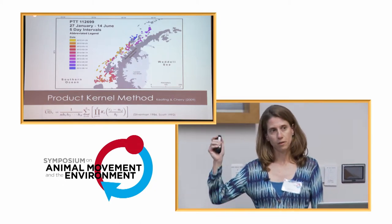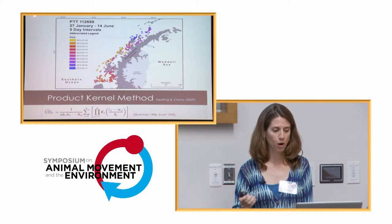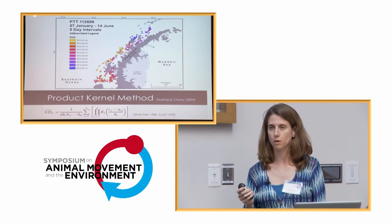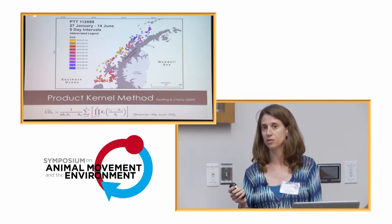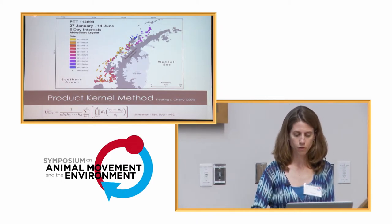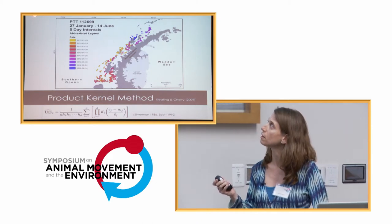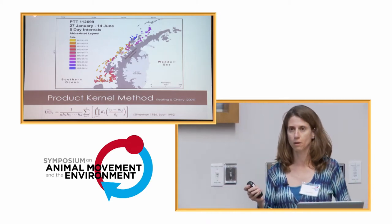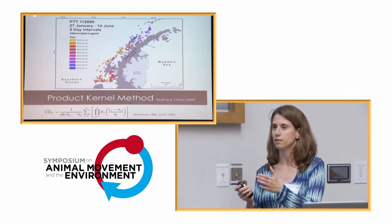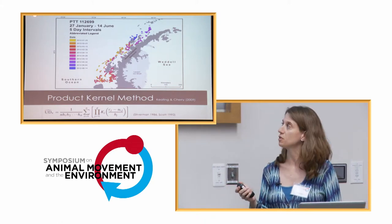What I'm trying to get a sense of is the moving distribution of the high-use areas of these whales over time. We used a new product kernel method from Keating and Cherry, which extends the traditional kernel density to include an additional time dimension T — and you could also use a Z dimension for altitude or depth. We used the full 162-day time span to create 95% kernel density estimators, generating those utilization distributions on every fifth day, centered on a particular date, with a five-day smoothing parameter for the time dimension.